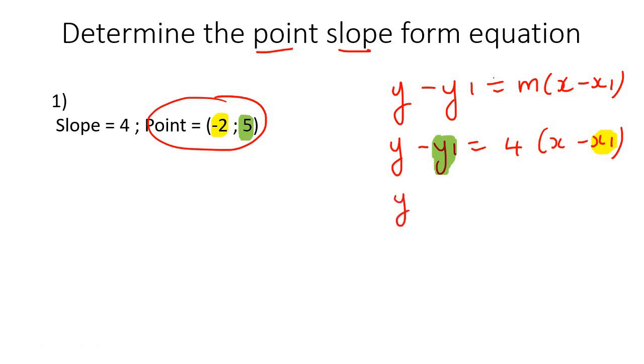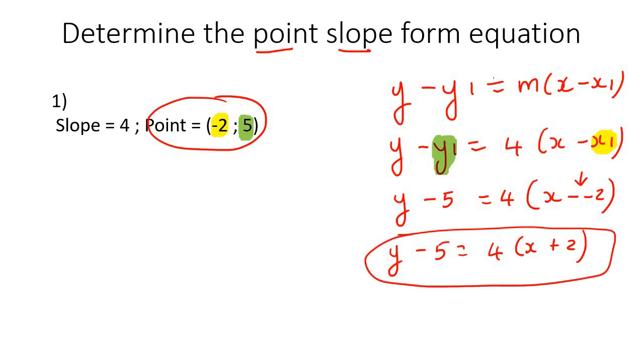And then this is a y value, so you put it over there. So let's go fill it in. It's going to be y take away 5 equals 4 times x take away negative 2. We've got two negatives now, so we're going to fix that up quickly by just saying x add 2. And that's it. You don't try to move things around or multiply out the brackets. You literally leave it just like that.